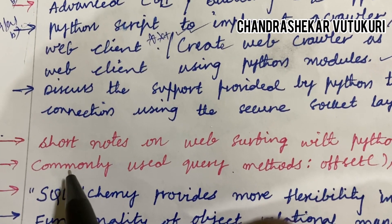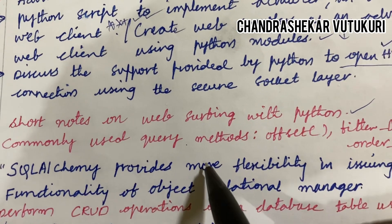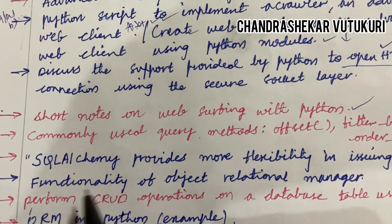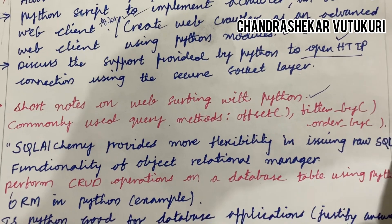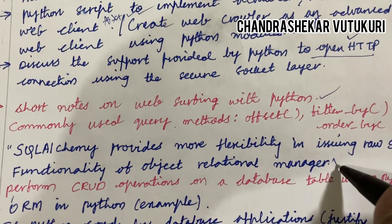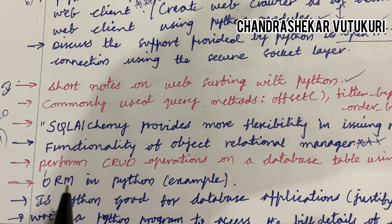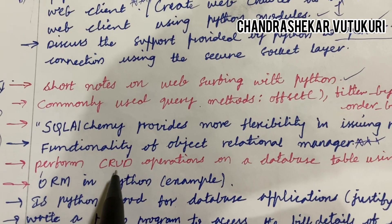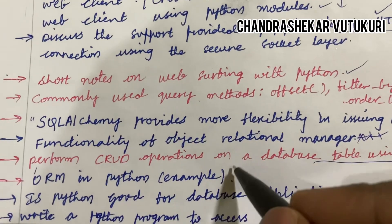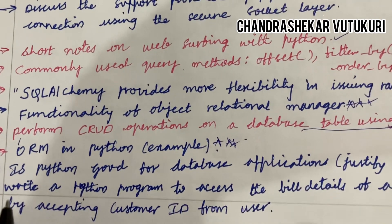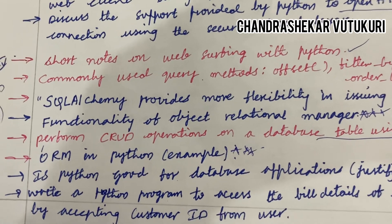Let's look at the 10th and 11th questions. Short notes on web surfing with Python and commonly used query methods — offset, filter by, etc. SQL in Django provides more flexibility in issuing raw SQL, and the functionality of the object-relational mapper is said to be a topmost question. From this you are going to get short questions as well as long questions. Perform CRUD operations on a database table using Python, and ORM in Python along with an example is said to be a short question. Is Python good for database applications? Justify your answer is a topmost question which may be asked this time.